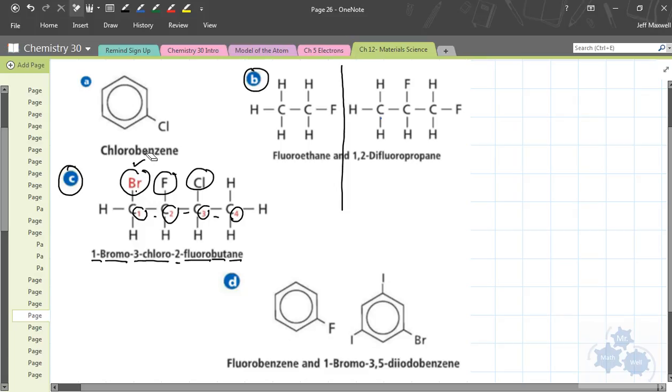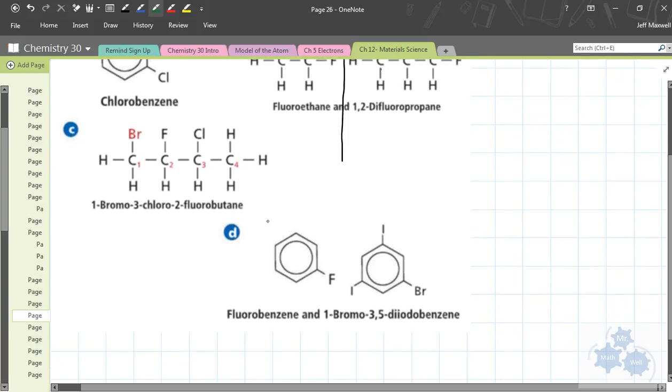Okay, a couple more examples here. A couple more examples in D here. So D, this is a benzene ring. So remember it's just attached at one spot, so it's fluorobenzene. That's pretty easy.